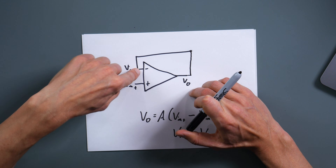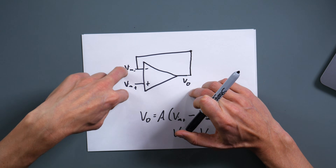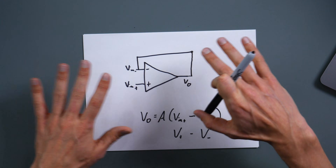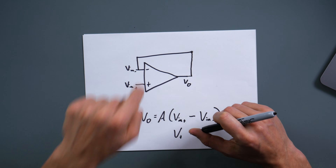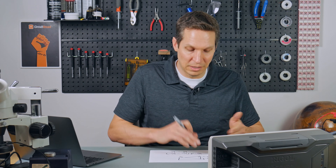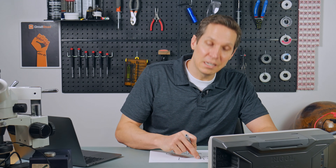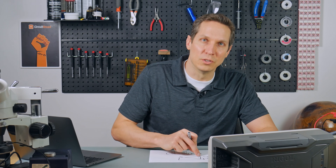That is the general principle by which the operational amplifier works in many of its configurations. The first big rule of operational amplifiers is that V negative and V positive should always have the same voltage. That makes the math so much easier — if V positive is connected to ground, you know V negative is also going to be at ground. If you know the voltage at one, you know the voltage at the other.